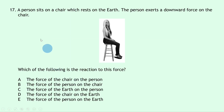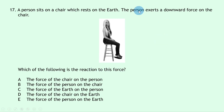Question 17 asks about Newton's third law. A person exerts a downward force on a chair. To find the reaction force (the Newton pair), we swap the objects in the sentence: the chair exerts an upward force on the person. So the answer is A — the force of the chair on the person.